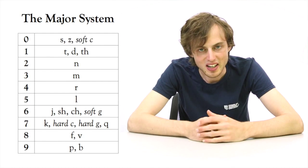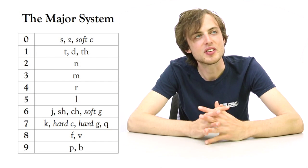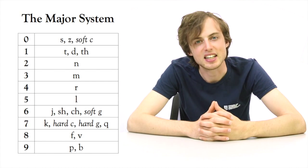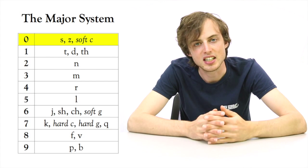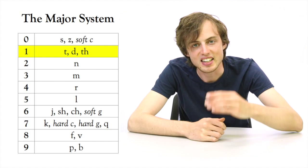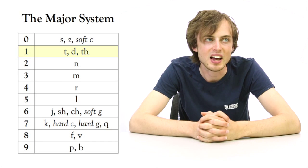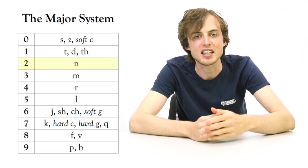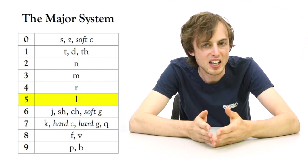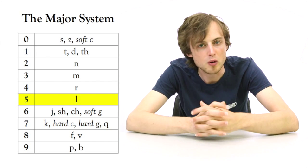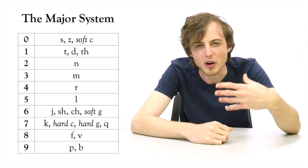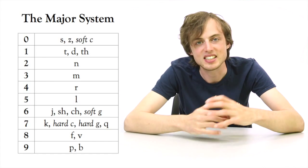When you want to memorize the major system table, there's not so much information so you could try to memorize it the normal way. You can also use small mnemonics: zero corresponds to S and Z because it begins with the Z sound; 1 corresponds to T and D because both letters have one vertical line; 2 and N because N has two vertical lines; M has three vertical lines for 3; 4 ends with the R sound; 5 corresponds to L because L is 50 in Roman numerals. Coming up with these small rules can help you memorize the table a little bit quicker.